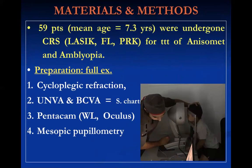The 59 patients had a mean age of 7.3 years and underwent different corneal refractive surgeries, including LASIK, femto-LASIK, and PRK for treatment of anisometropia and amblyopia, followed by patching to correct the amblyopia. All children were prepared carefully with full ocular examination including cycloplegic refraction, unaided visual acuity, best corrected visual acuity using the Snellen chart, slit-lamp examination for anterior and posterior segments, Pentacam, and mesopic pupillometry.